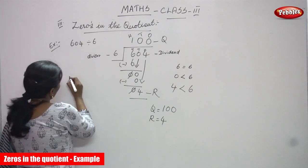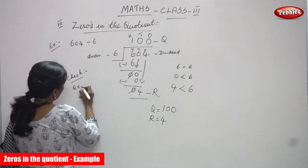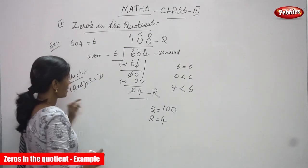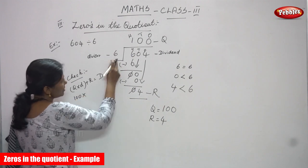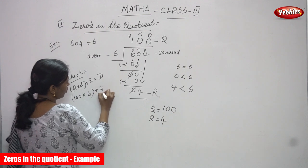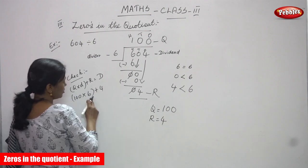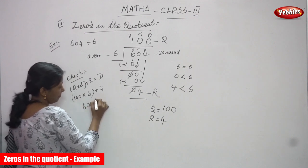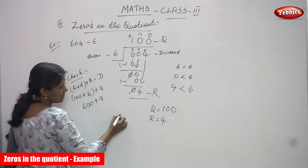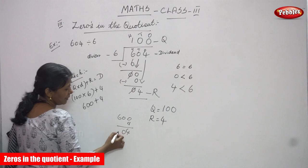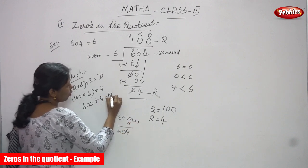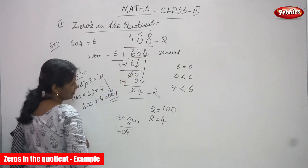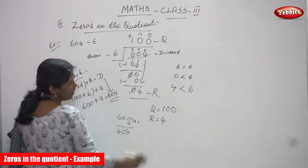Now let's check. The check method is: quotient into divisor plus remainder equals dividend. Quotient is 100, divisor is 6, remainder is 4. So 100 into 6, plus 4. First multiply: 1 into 6 is 6, then add two zeros to get 600. Then 600 plus 4 equals 604. The answer is 604 — that is the dividend. So the quotient and remainder are both correct.